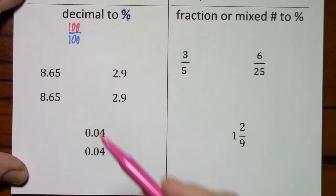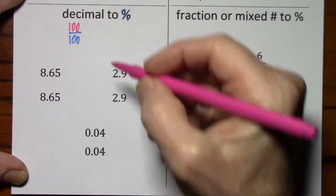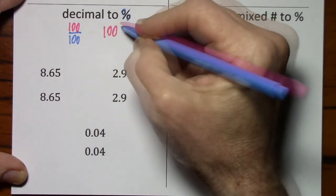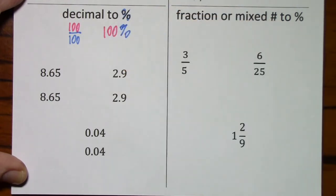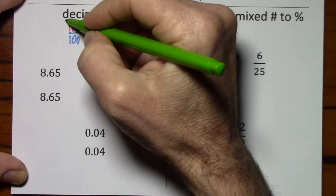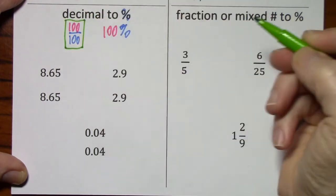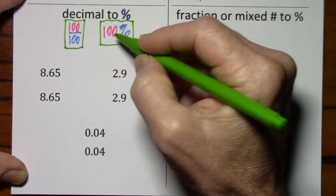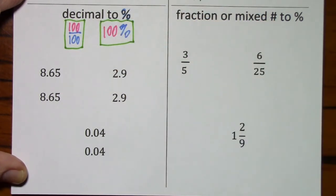If you multiply by 1, you don't change the value. You may change the appearance of a number. But this isn't going to help a lot in this form, so I'm going to write it as 100%. So just as 100 over 100 is equivalent to a 1, 100% might sound like a lot, but it's really just a fancy way of writing 1.